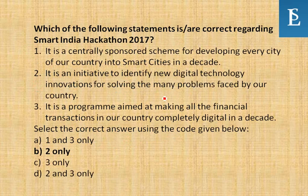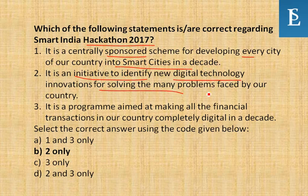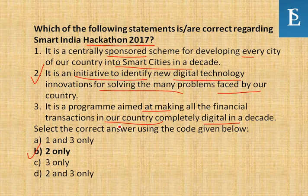Which of the following statements is correct regarding Smart India Hackathon 2017? Option A: it is a scheme for developing every city into smart cities in a decade — no. Option B: it is an initiative to identify new digital technology innovation for solving the many problems faced by our country — yes, this is right. Option C: a program aimed at making all financial transactions completely digital in a decade — no. So option B is correct.